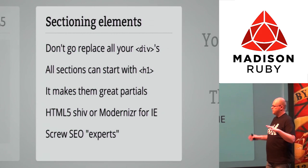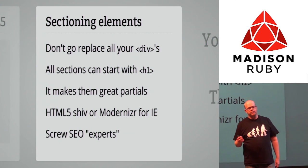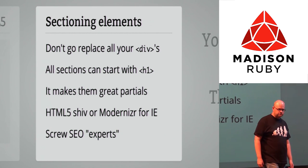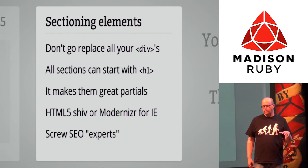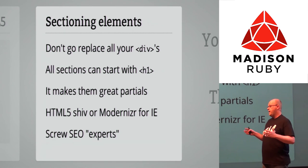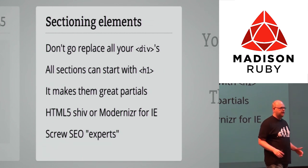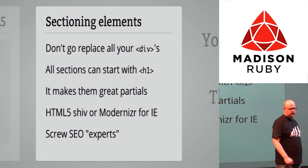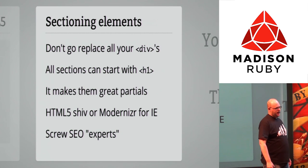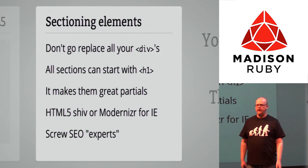An aside is an aside instead of a div with an ID aside. You have an article with an H1 again. Sectioning elements are great, but don't go replace all your divs — go to HTML5doctor.com, read about the new sectioning elements and use them appropriately. All these sections can start with an H1, which makes them great for reusability. You can have a partial with an article starting with an H1 and use it anywhere on the page. To make new HTML5 elements work in IE, use Modernizr or an HTML5 shiv.